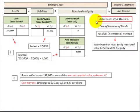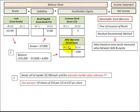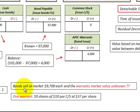Here we're going to look at the detachable stock warrants using the residual or incremental method. This is where we know either the debt portion of the bond we issued or the equity portion — that would be the warrants issued with the bonds — but we do not know both of them. So we have to determine one based on the value of the other. In this example, we know what the debt portion or bond value would be: $9,700 for each bond. The warrants' market value is unknown, so that's what we have to determine.